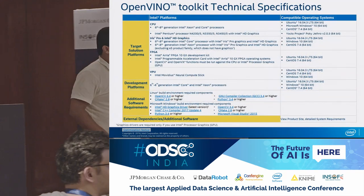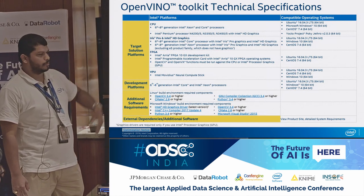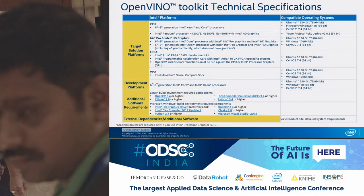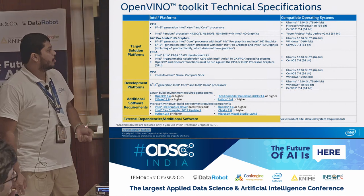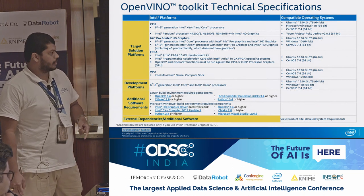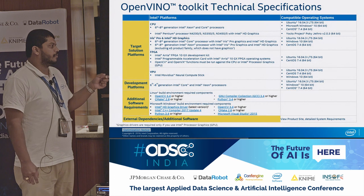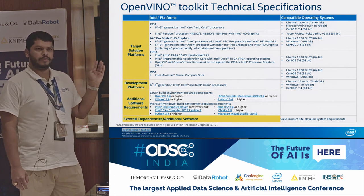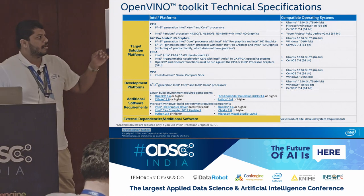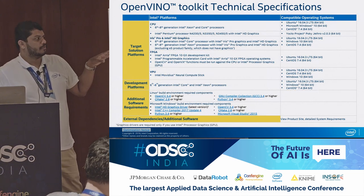This shows what target platforms OpenVINO supports. Most of the current generation CPUs — 6th generation to 8th generation — are supported. The code name is Skylake; from Skylake onwards, most Intel CPUs and graphics have support for OpenVINO. It supports most common operating systems: Ubuntu, Windows, and CentOS. Today I'll be demonstrating on Ubuntu 16.04 LTS. There are prerequisites like Python 3.4 and OpenCV which you need to install before installing OpenVINO — these are listed on the first page of the OpenVINO downloads website.